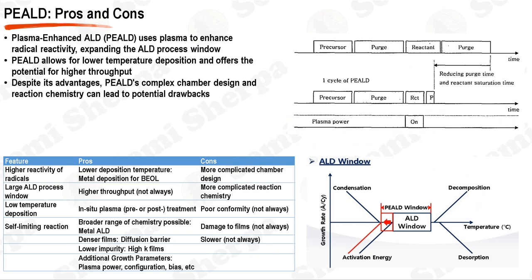Atomic layer deposition, ALD, is a film growth process that involves the exposure of a substrate surface to alternate gaseous species, also known as precursors or reactants. These precursors are never present simultaneously in the reactor, but are inserted in a series of sequential, non-overlapping pulses. Each pulse reacts with the surface in a self-limiting manner, meaning the reaction stops once all available sites on the surface are consumed. This ability to regulate film growth to a single atomic layer per cycle is one of the key advantages of ALD, leading to films with high purity and excellent uniformity.